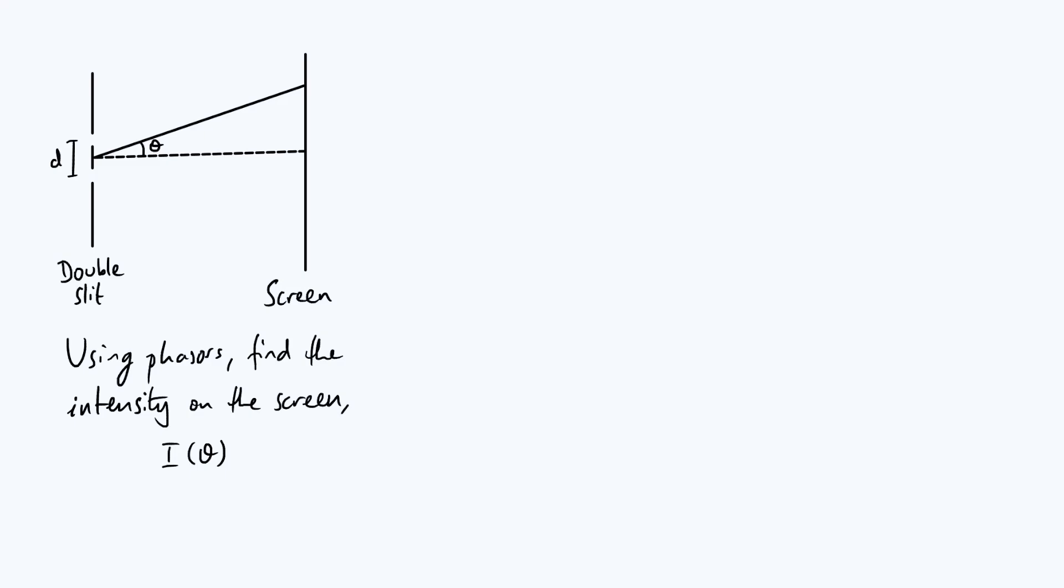So the setup that we're dealing with is that we have some kind of wave coming in from left to right on my diagram. You might want to imagine it as a light wave, but it could equally well be sound or a water wave, any type of wave.